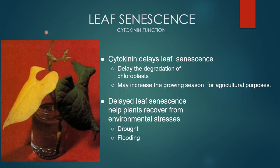Leaf senescence: cytokinin delays leaf senescence, delays the degradation of chloroplasts, and may increase the growing season for agriculture. Delaying leaf senescence helps plants recover from environmental drought and flood.